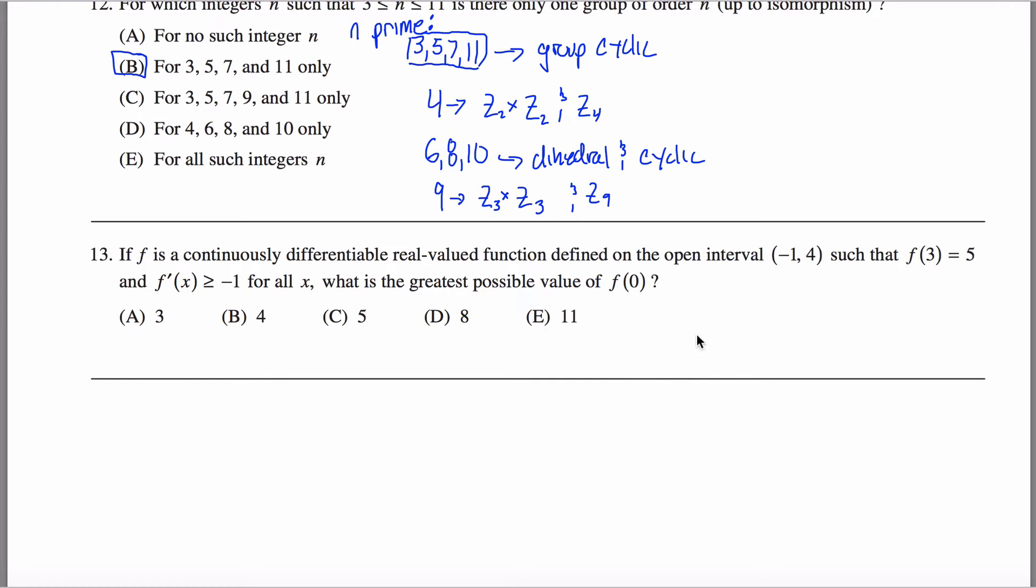Okay, here's problem 13 from the math subject GRE practice test. What I'm told here is that I have a continuously differentiable real valued function on this open interval negative one to four, and I know that f of three equals five.